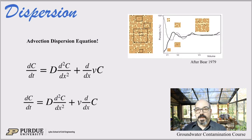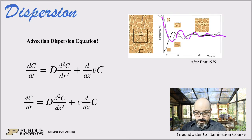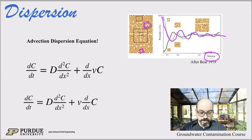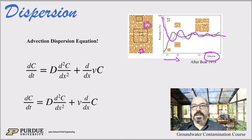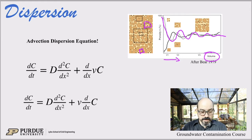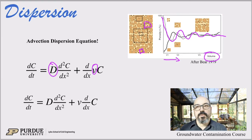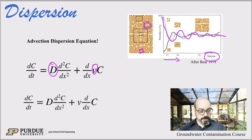At a larger scale, there's always a representative elementary volume. If we average over some distance — taking progressively larger volumes — after some volume that samples all the variability, you get an average porosity. Same thing for velocity or the dispersion coefficient: at some scale, velocity can be represented by an average velocity over the formation, and the dispersion coefficient is the result of all that heterogeneity. The dispersion coefficient ends up being somewhat constant at a large enough volume.